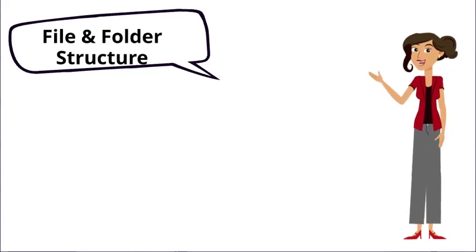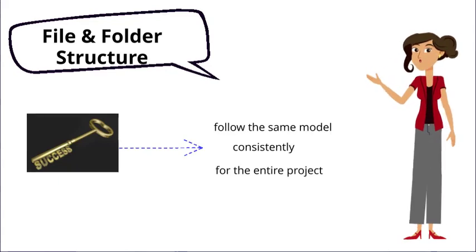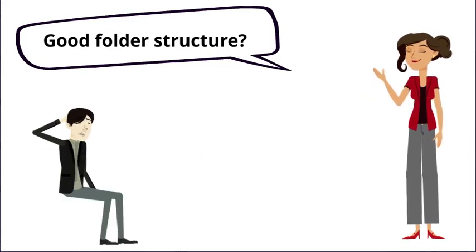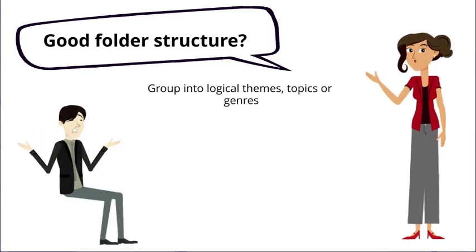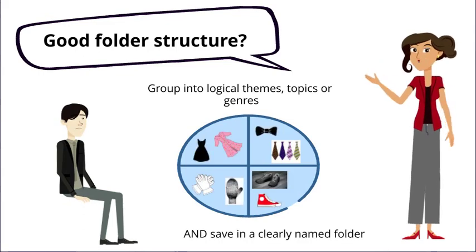Let's start with establishing a logical folder structure. The key to success here is for everyone on the team to follow the same model consistently throughout the entire project. You may be wondering what a good folder structure looks like. Ideally, you'll want to group your files into logical themes, topics, or genres, and save them in a clearly named folder.